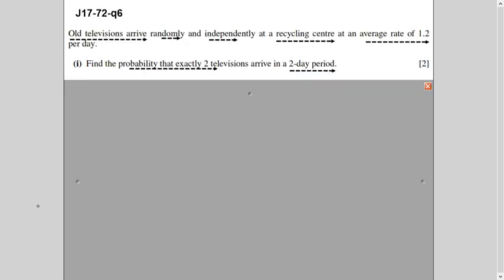So let's begin with the question. I will explain and at the same time help you recall what you need to know. If you want to see a detailed explanation of Poisson Distribution, I have made three videos and the link is provided in the description. The question says that old televisions arrive randomly and independently.